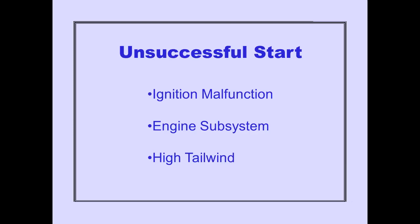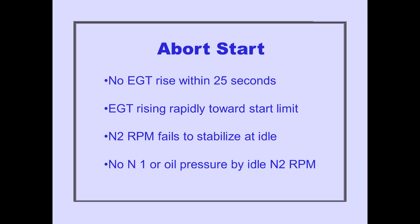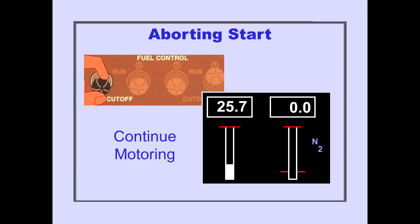An unsuccessful start may be due to an ignition malfunction, an engine subsystem problem, or a high tailwind. The start should be aborted if there is no EGT rise within 25 seconds, EGT is rising rapidly toward the start limit, N2 RPM fails to stabilize at idle, or no N1 rotation or oil pressure is noted by idle N2 RPM. Moving the fuel control switch to cutoff aborts the start. Engine motoring should be continued to clear out trapped fuel or vapors.